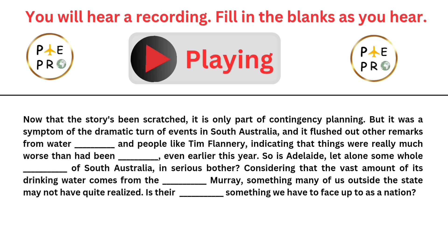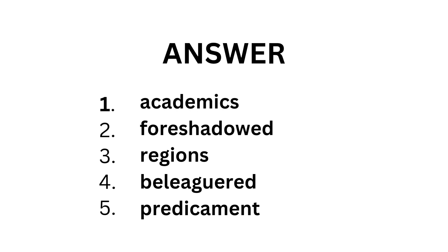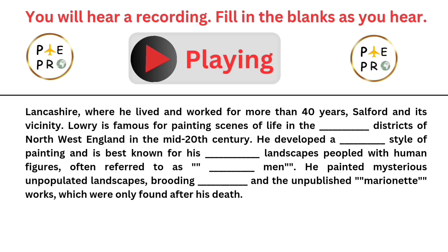Lancaster, where he lived and worked for more than 40 years, suffered in its vicinity. Lowry is famous for painting scenes of life in the industrial districts of Northwest England. In the mid-20th century, he developed a distinctive style of painting and is best known for his cityscapes peopled with human figures, often referred to as matchstick men. He also painted mysterious, unpopulated landscapes, brooding portraits, and the unpublished marionette works, which were only found after his death.